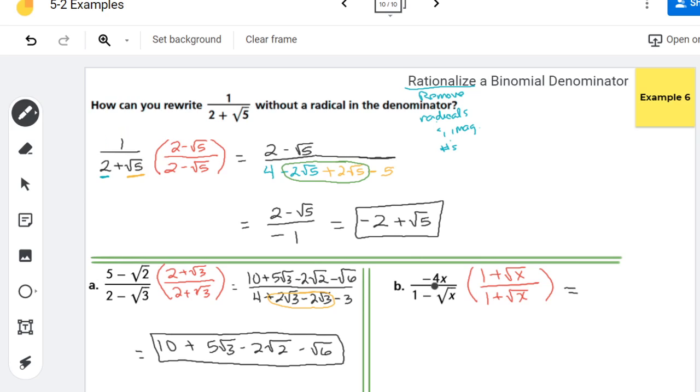So up top, negative 4x times 1 is negative 4x. And negative 4x times the square root of x is negative 4x root x. Down below, 1 times 1 is 1. 1 times the square root of x is the square root of x. Negative root x times 1 is negative root x. And negative root x times positive root x is minus x.